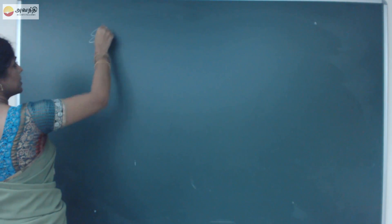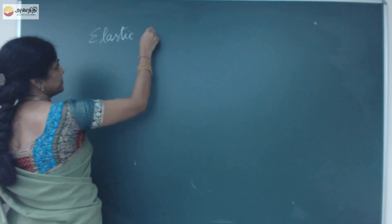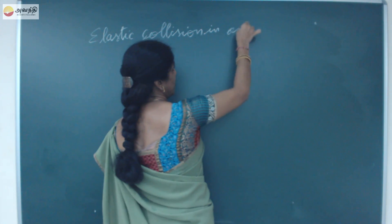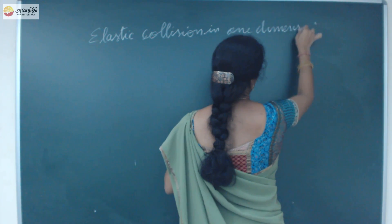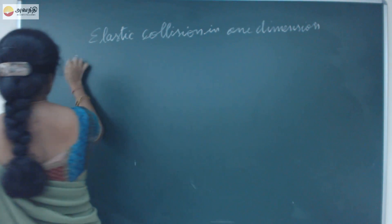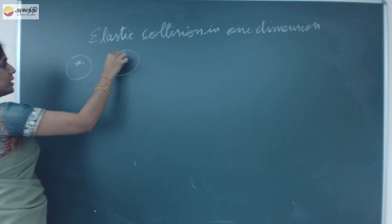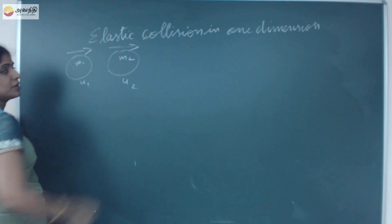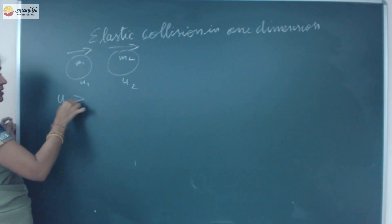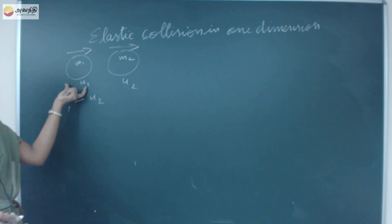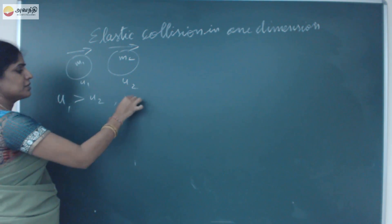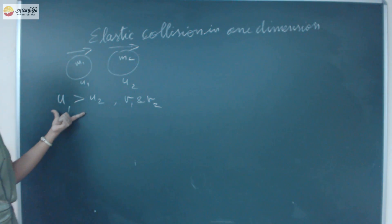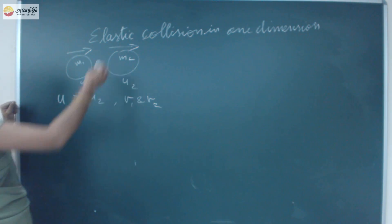Elastic Collision in One-Dimensional Motion. There are two objects of masses M1 and M2. Let them have initial velocities U1 and U2, travelling in the same direction. If U1 is greater than U2, they will collide. After collision, let them travel with final velocities V1 and V2.